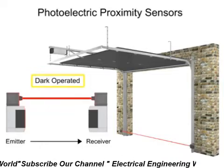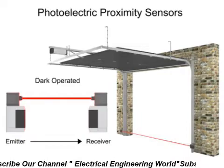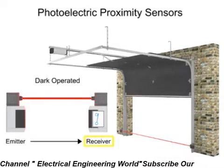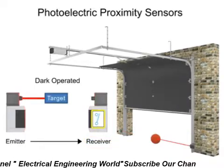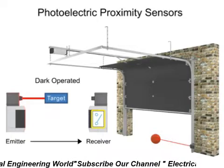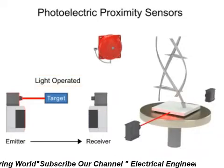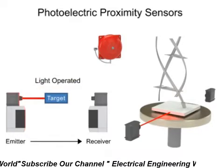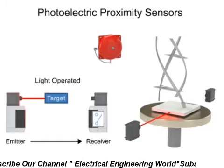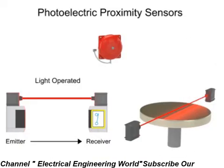In this dark-operated mode example, the beam of light is being received by the garage door receiver. When a target enters the beam of light, it activates the switch, which will stop the garage door from closing. Conversely, in this light-operated mode example, the absence of light being received by the receiver is normal. When the object is removed from the table, the switch is triggered and the alarm will sound.